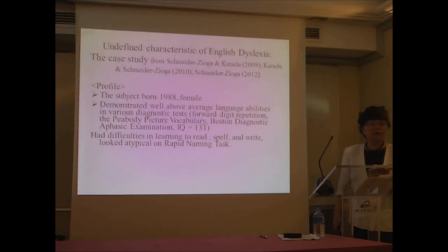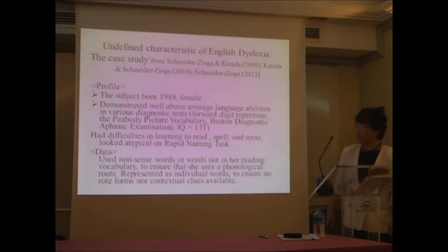She was in a complete bilingual environment at home between English and Greek. Because she started severely stuttering at the age of two and a half, the mother immediately contacted counselors. And they advised her to talk in both languages. So they stopped talking to her in Greek. So she was grown up in English monolingual environment. So we used the nonsense words or words not in her reading vocabulary. This is to ensure that she uses a phonological route. We represented as individual words to ensure no root forms, no contextual clues available.